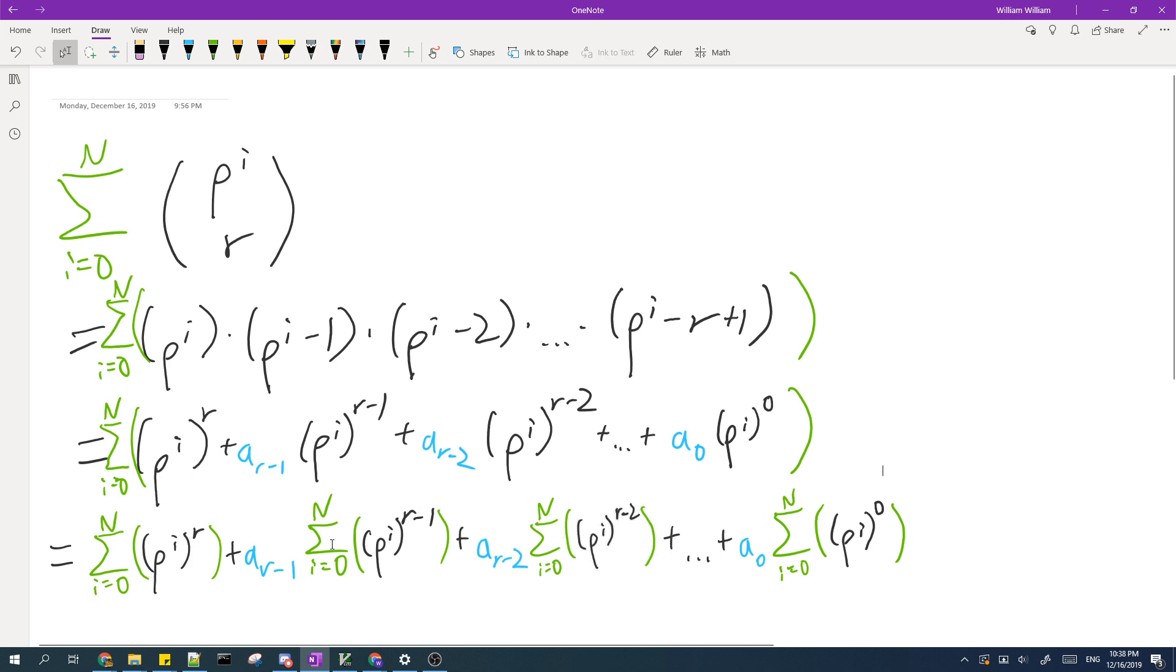So now this solution has two parts. The first part is to calculate the green summations here individually. The second part is to find the blue coefficients.